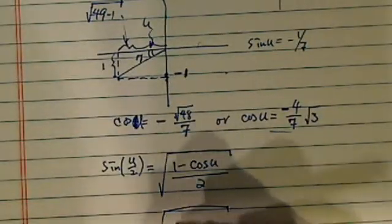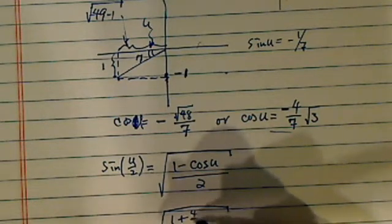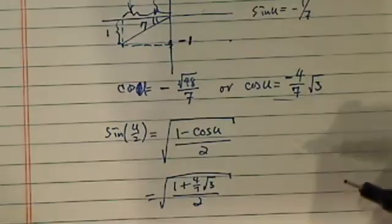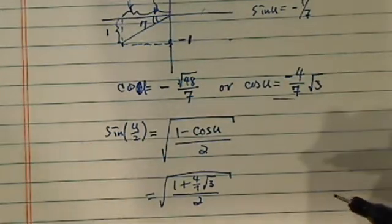Let's substitute it in. It's a little messy: square root of (1 plus 4 radical 3 over 7) divided by 2. That's one of the answers.